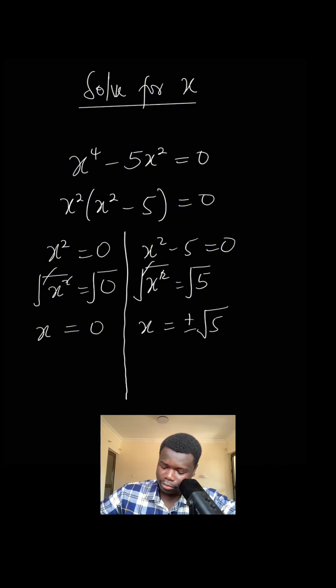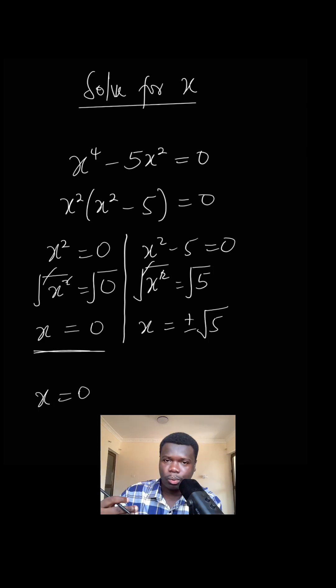So you see the values for x - we have to get three different answers for x. In this case, x = 0, and in this case we have ±√5.